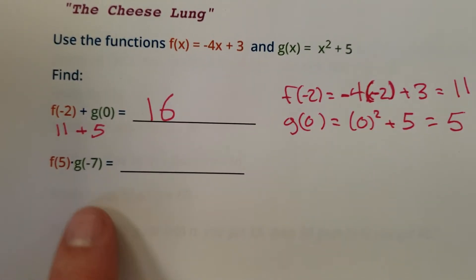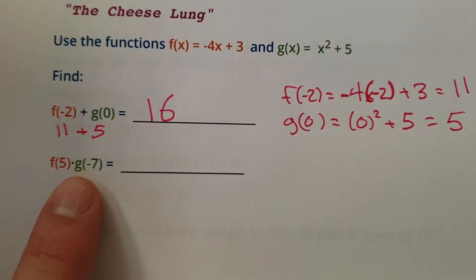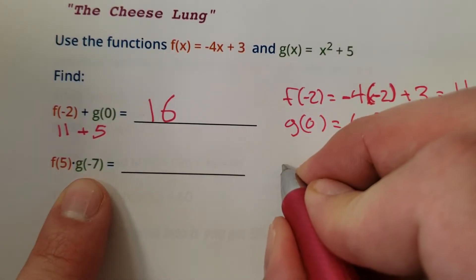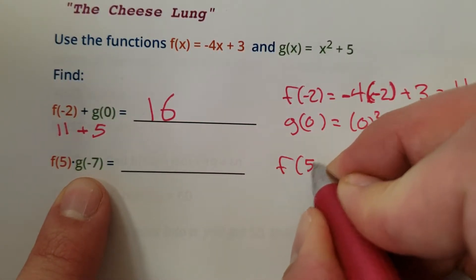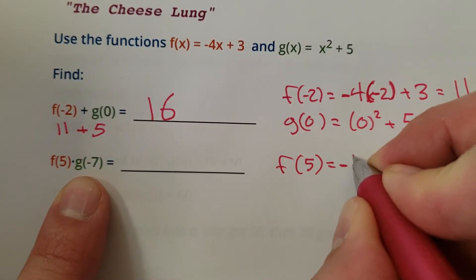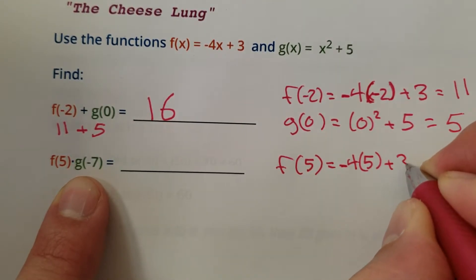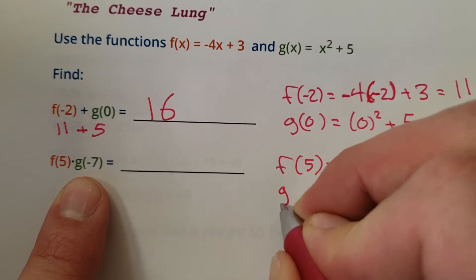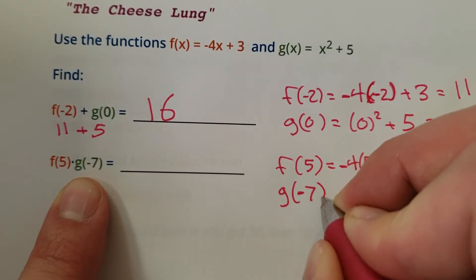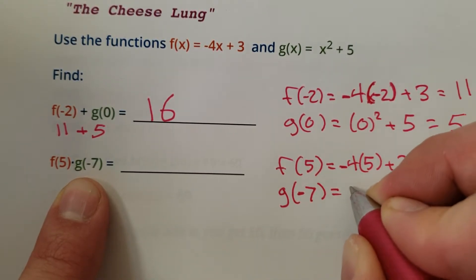All right. Next move. Take f of 5 times g of negative 7. Here we go. So we got to go f of 5 equals negative 4 times 5 plus 3. And then we got to go g of negative 7 equals. Now careful. Use brackets please.